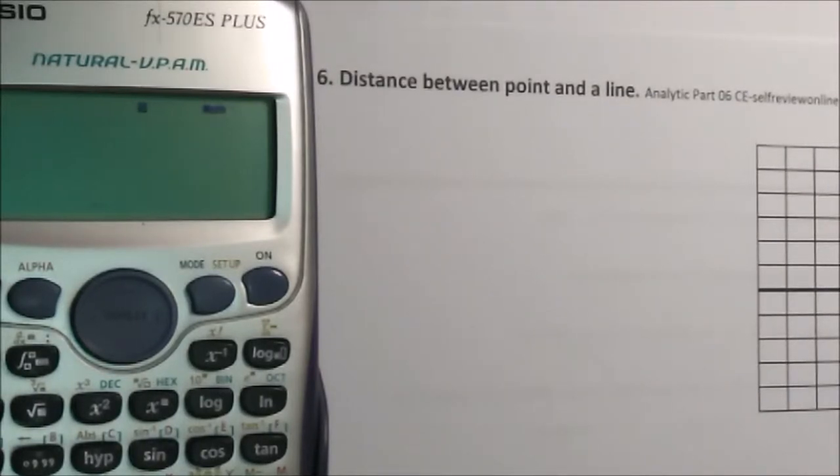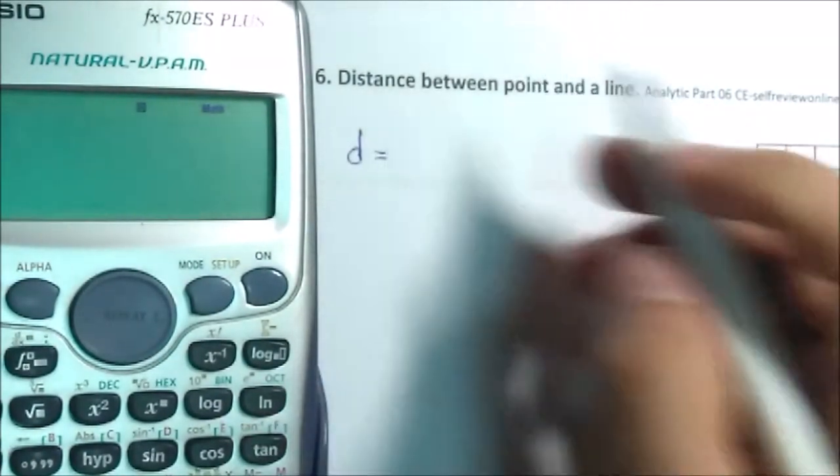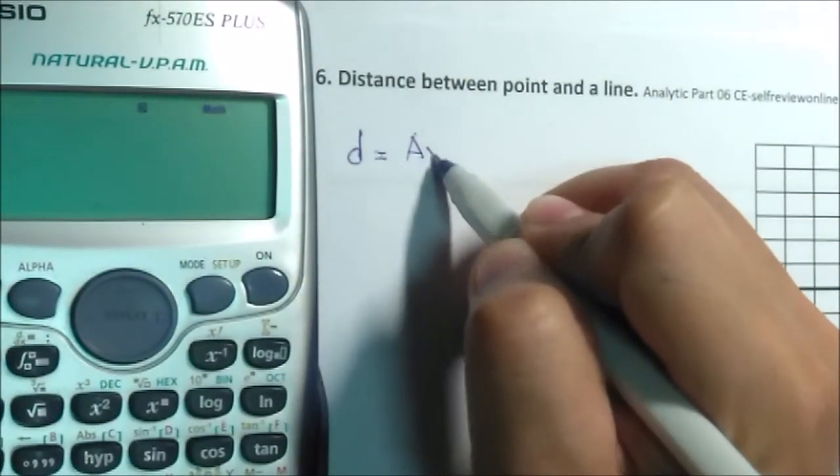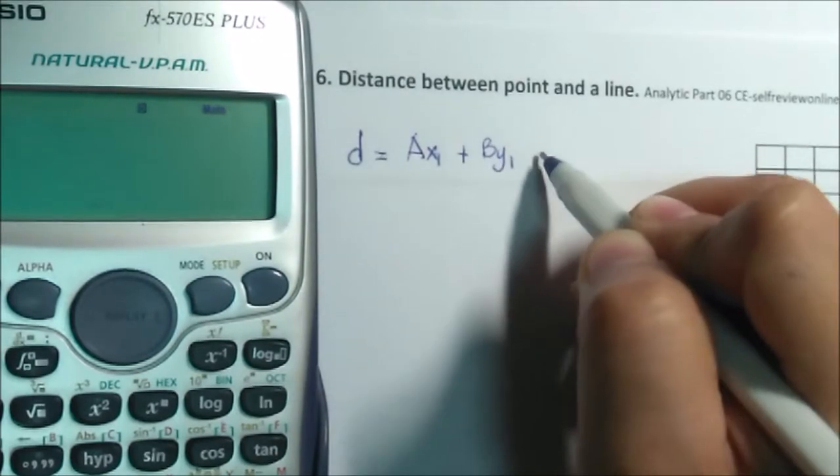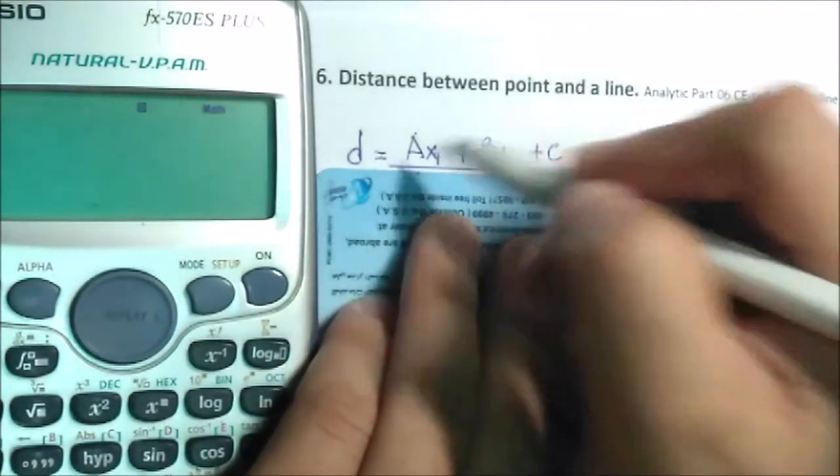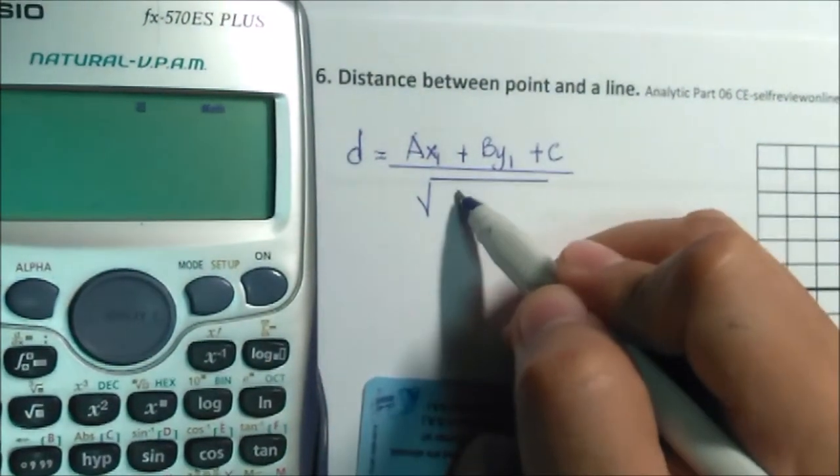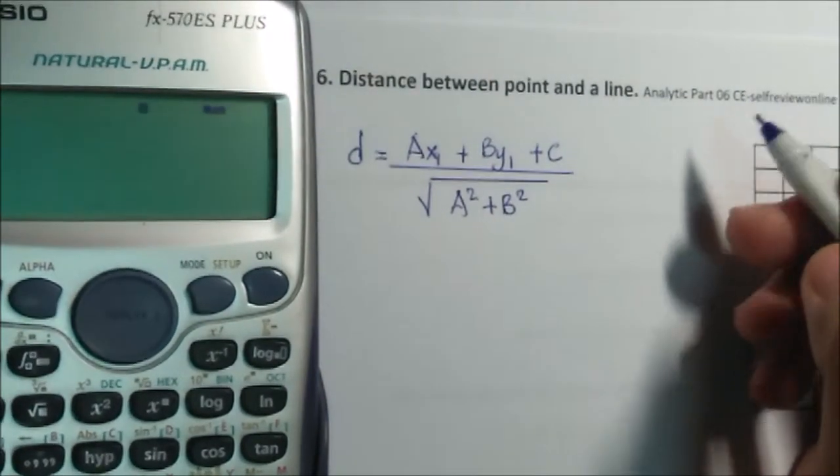We have the formula: d equals Ax₁ plus By₁ plus C over square root of A squared plus B squared.